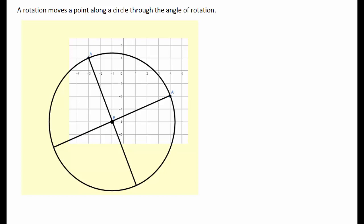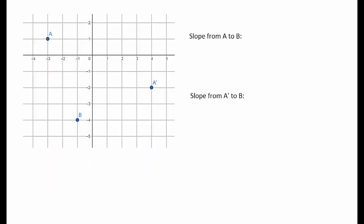If we move from A along the circle centered at B, we get to A prime after 90 degrees. Let's compare the slopes from A to B and from A prime to B. From A to B we need to go down 5 and over 2, so the slope is negative 5 over 2.